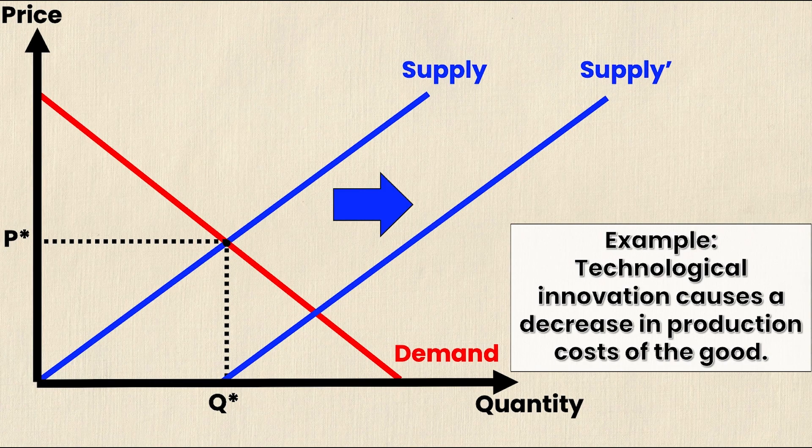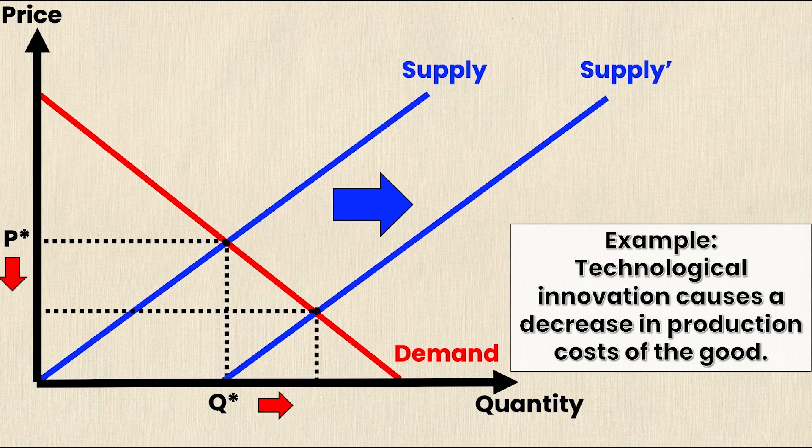There's now a new intersection point between the new supply curve and the original demand curve. So our price has actually decreased and we can follow it along to the new intersection point here and you'll notice that quantity has increased to this new point here.